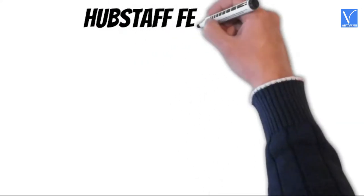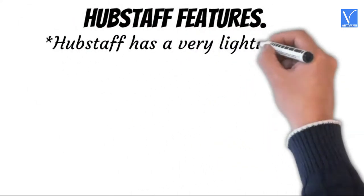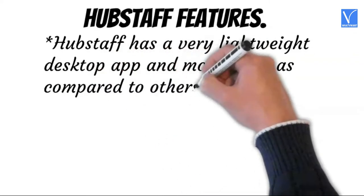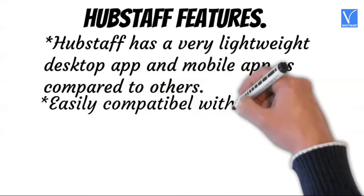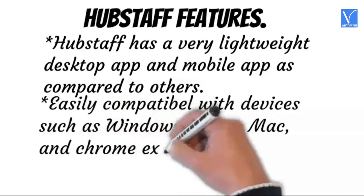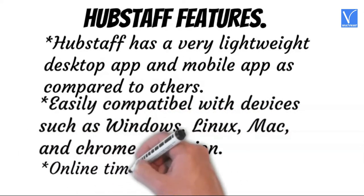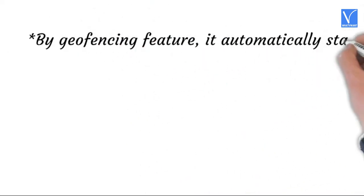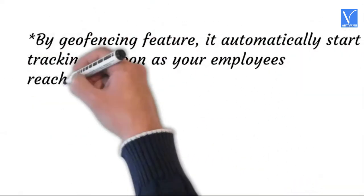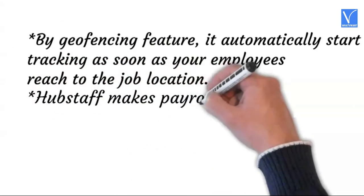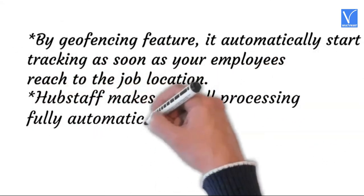Features of Hubstaff: it has a very lightweight desktop app and mobile app compared to others. Easily compatible with devices such as Windows, Linux, Mac, and Chrome extension. Online timesheet record and access. By the geofencing feature, it automatically starts tracking as soon as your employees reach the job location. Hubstaff makes payroll processing fully automatic. Attendance tracking and task scheduling are also available.